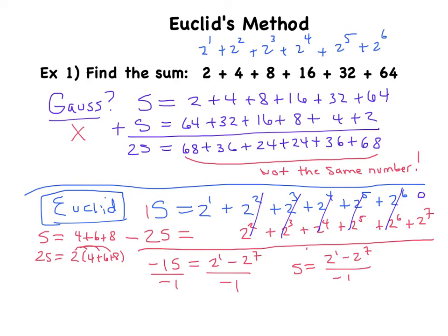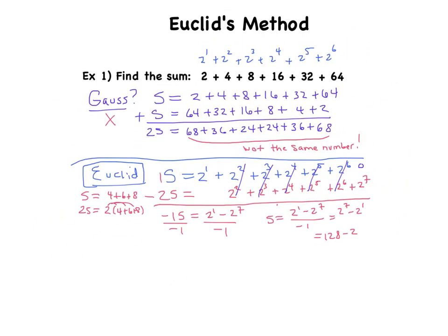Just to finish this off, if you wanted to rewrite this, when you divide by negative 1, that's ultimately going to allow you to switch the order of those top terms. 2 to the seventh, I believe, is 128. I'm going to minus that 2, and I'm going to get my final answer of 126.